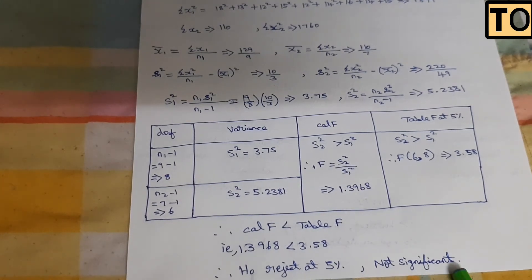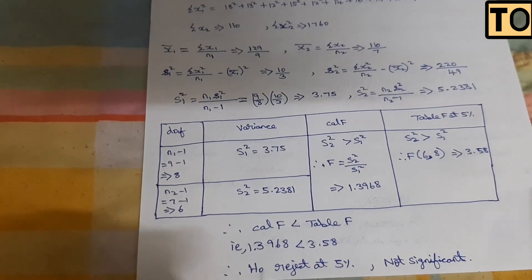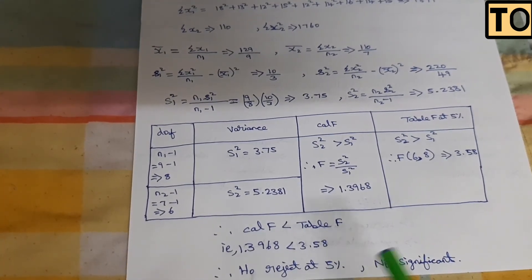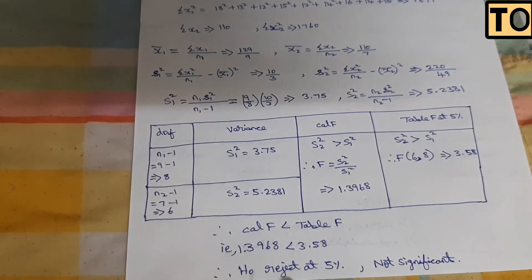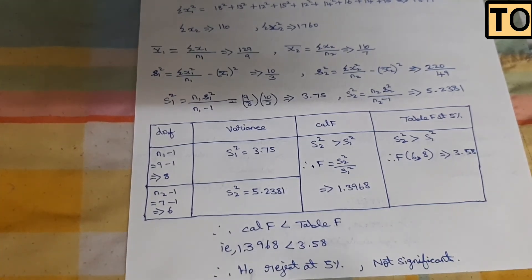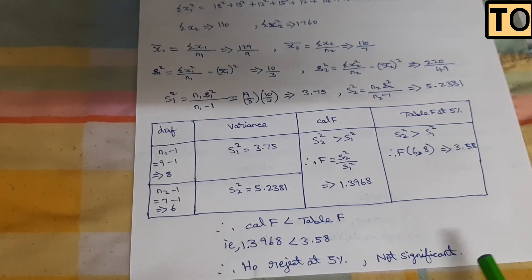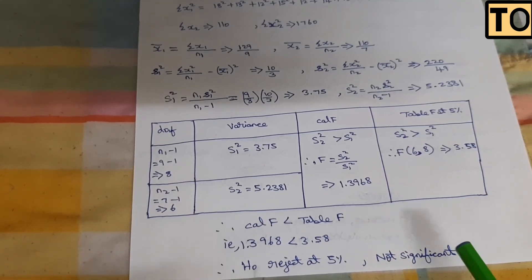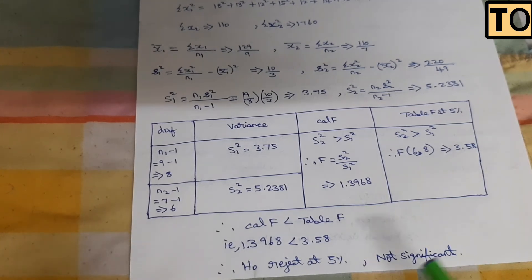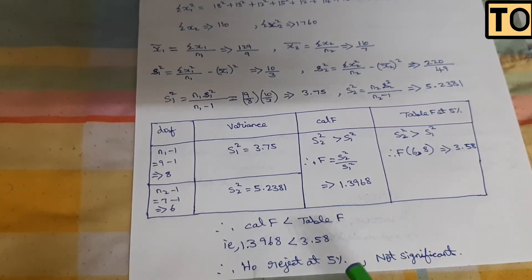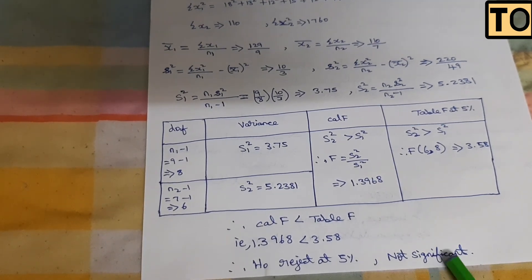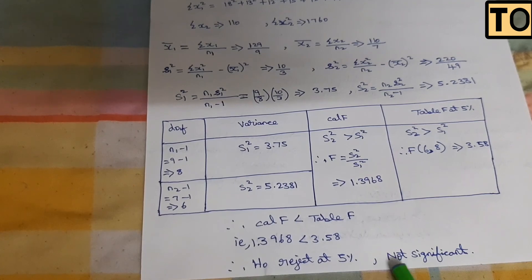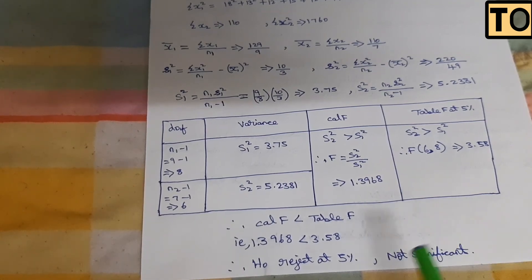It is not significant. So that is the reason why we accept H0 — if it is not significant, you accept it. If someone is asking for an answer in a paper or presentation, the result is not significant, so you do not reject it.